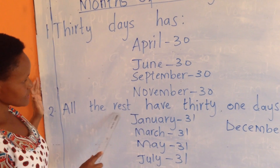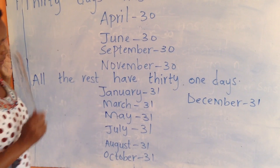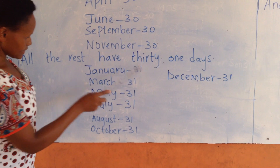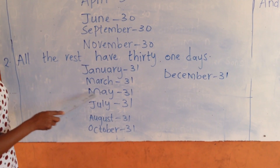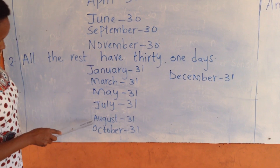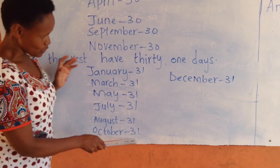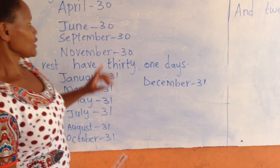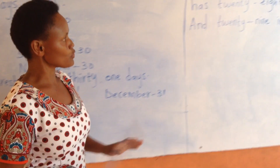All the rest have 31 days. January has 31 days, March 31, May 31, July 31, August 31, October 31, December 31. There is only one month that I have not mentioned, and that is February.